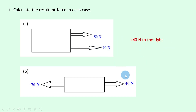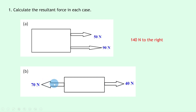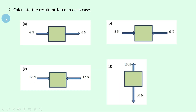For part b we've got 70 newtons to the left but 40 newtons to the right. In one dimension we need to subtract the 40 newtons from the 70 newtons to find the resultant, and that gives us 30 newtons to the left.